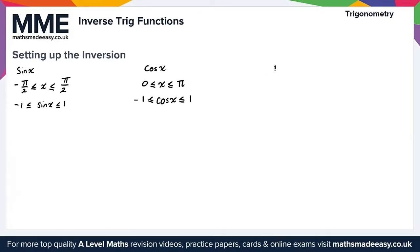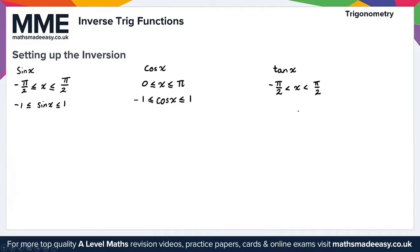And finally for tan x, the domain is restricted to minus pi over 2 to pi over 2. Note that this is a strict inequality, unlike sine x and cos x. And for the range of tan x, this is unrestricted.